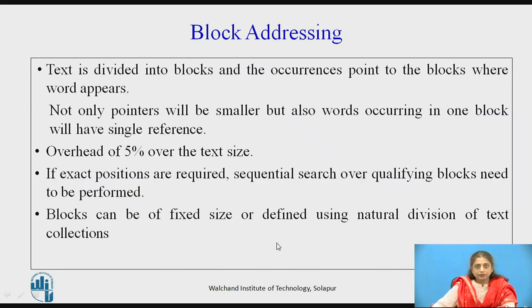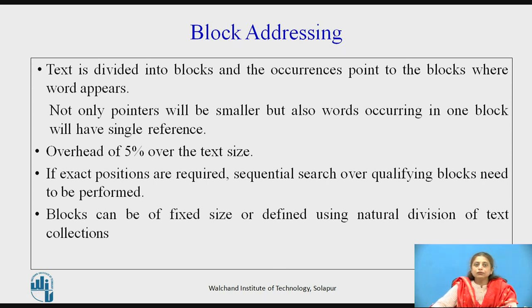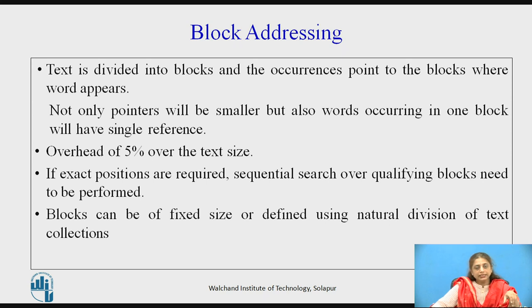In block addressing, the text is divided into blocks and occurrences will point to a block instead of an exact position. Since we store block positions, many words pointing to the same block will reduce the number of occurrences. However, if you want the exact position, you must first identify the block and then do sequential searching within that block. A block can be defined with a fixed size — for example, B words per block — or with a natural division such as sentence boundaries. Each method has its advantages and disadvantages.